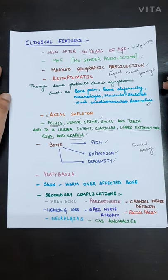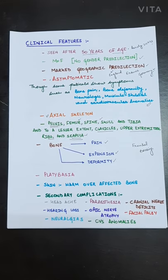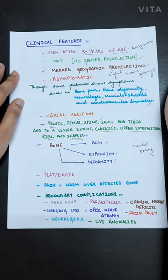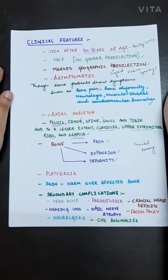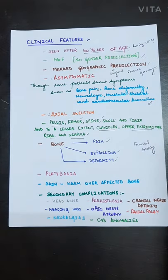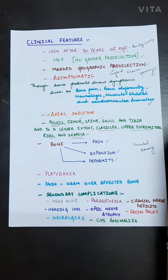Clinical features of Paget's disease: It is a disease of elderly so it is seen after 50 years of age. Very rarely it occurs below 20 years of age. There is no gender predilection but there is marked geographic predilection. It occurs in England, France, Germany.